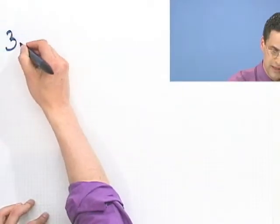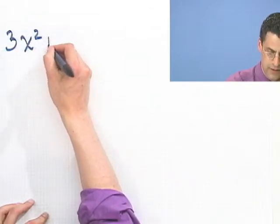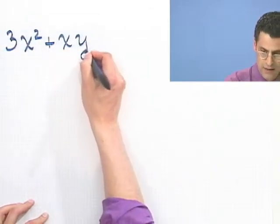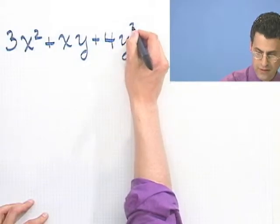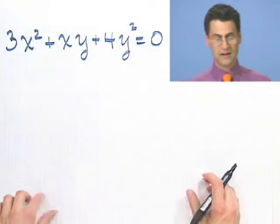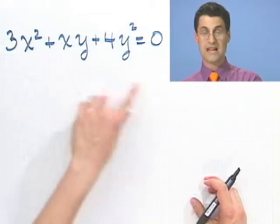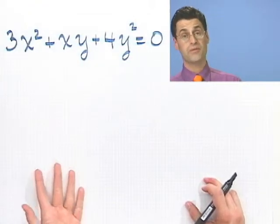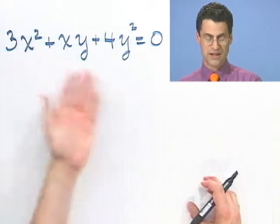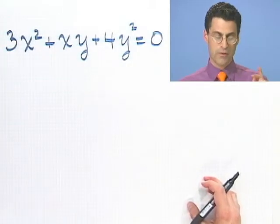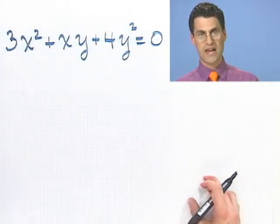Here's the question: 3x² + xy + 4y² = 0. Notice there are two different variables, x and y. We want to figure out which x's and y's will satisfy that. The question asks: what is the value for x in terms of y? So basically, solve this equation for x, but the answer will have y's in it.